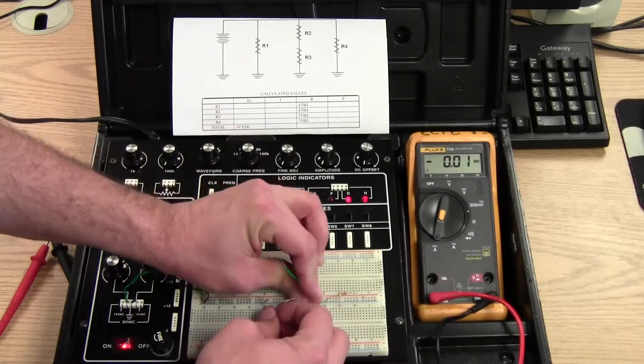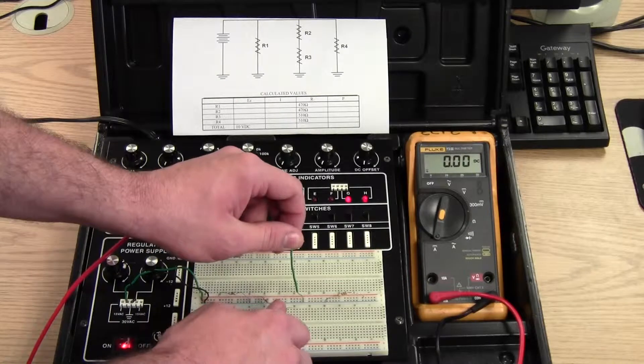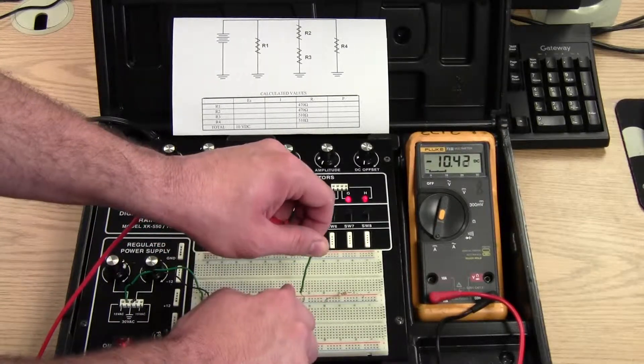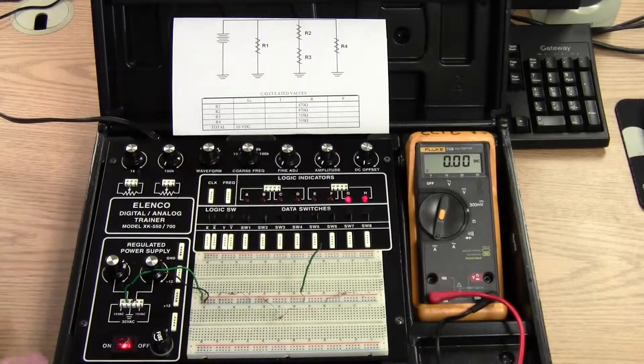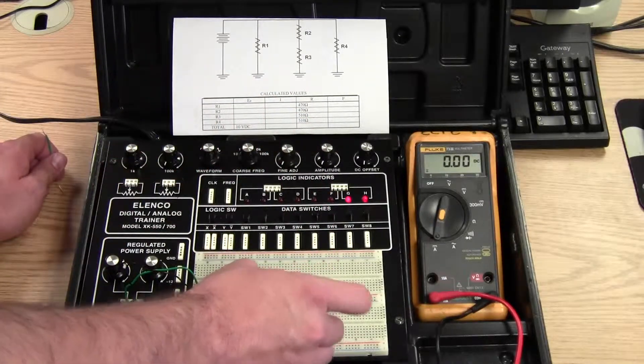I'll pull it out and measure it. But you wouldn't necessarily have to. We should get the same 10.4 amps that we got through R2. We did. We'll put that back together.